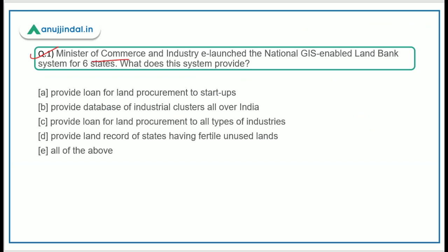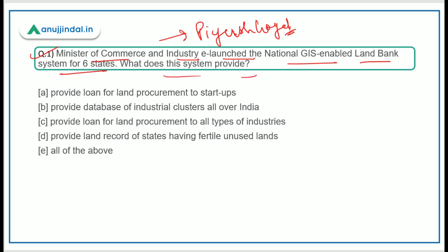Minister of Commerce and Industry, Piyush Goel, launched the National GIS-Enabled Land Bank System for six states. What does this system provide? Basically, what does this land bank system provide?